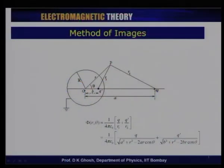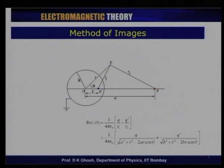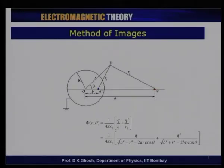If there is a charge q, unlike in the plane case — the case of a plane conductor — where the word 'image' is readily understandable because the position of the image charge is exactly equal to the object distance, and the magnitude of the image charge is equal to that of the object charge, though its sign is opposite.